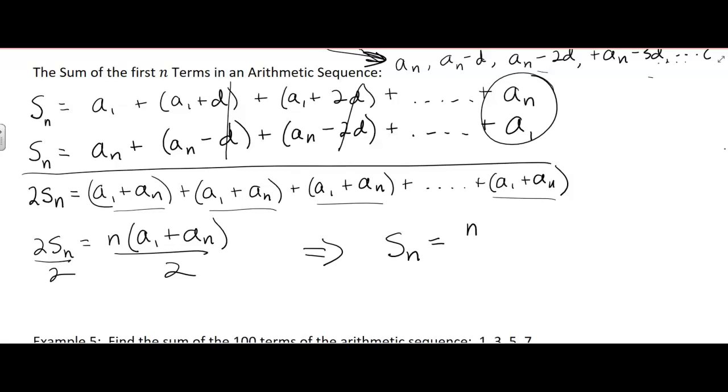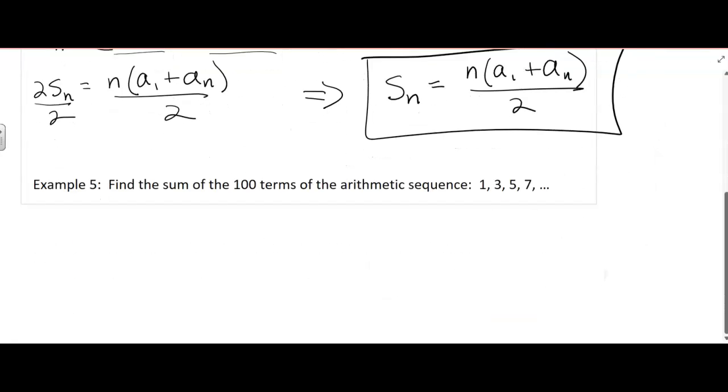The formula is n times (a sub 1 plus a sub n) over 2. So that's the formula we're using for the sum of n terms in an arithmetic sequence. You can find the sum of the first 100 terms. It's going to be 50 times 101, which is 5,050.